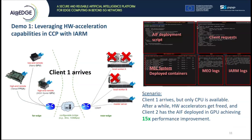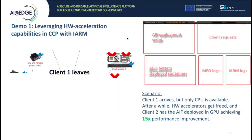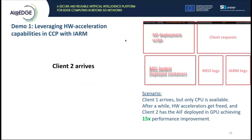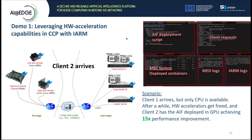Now let's describe the first demo titled 'Leveraging hardware acceleration capabilities in CCP with IARM.' The video screen is split into several windows to showcase the interoperability between the different components of the AI-TECH MEX system. The steps are: first, client one arrives and provides an AIF descriptor for EMAS classification, but only the CPU is available since hardware accelerators are occupied by other workloads. After a while, client one finishes execution and leaves. The hardware acceleration resources are then free. Client two arrives and requests the EMAS classification AIF. This time, both FPGA and GPU are available, so IARM selects GPU for improved performance, achieving a 15 times decreased execution time.